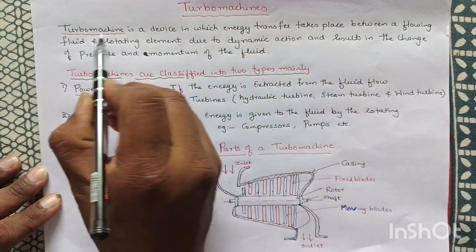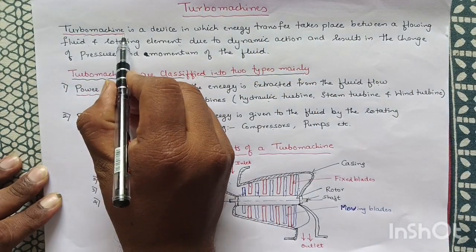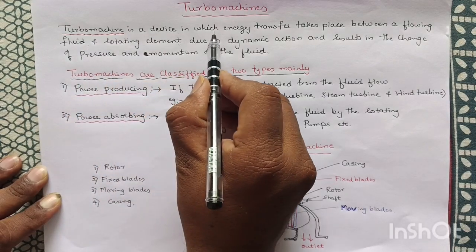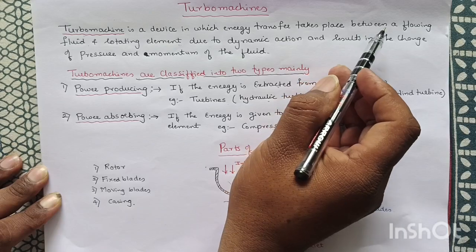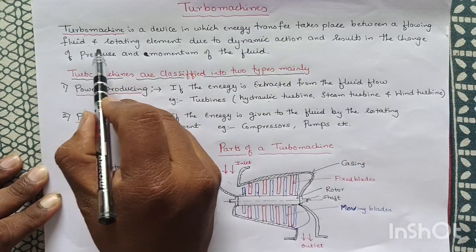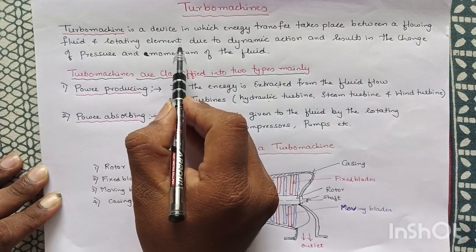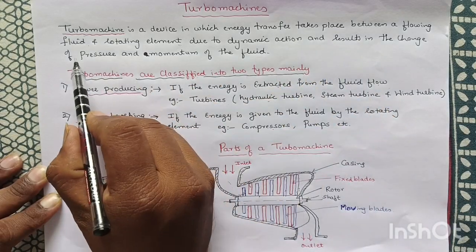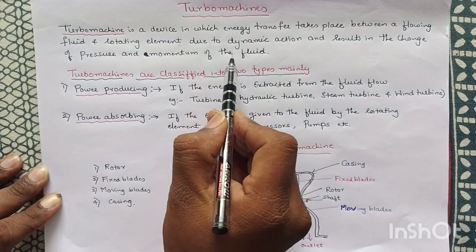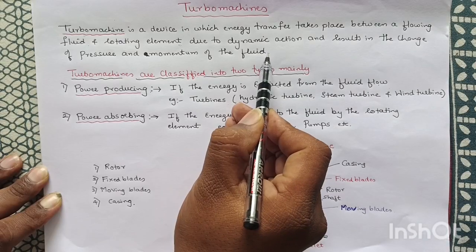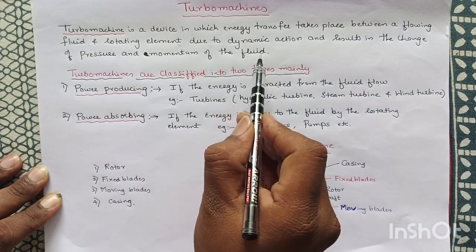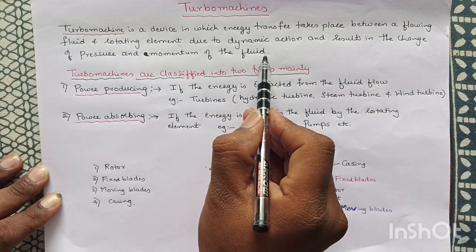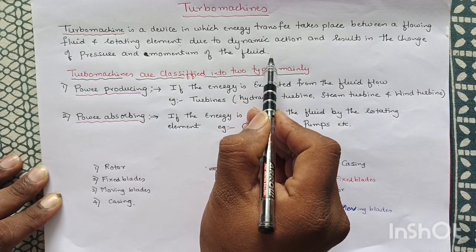Turbomachines. Let us define a Turbomachine. A Turbomachine is a device in which energy transfer takes place between a flowing fluid and a rotating element due to dynamic action, and results in the change of pressure and momentum of the fluid. Depending on the type of Turbomachine, the pressure and momentum of the fluid may increase or decrease.